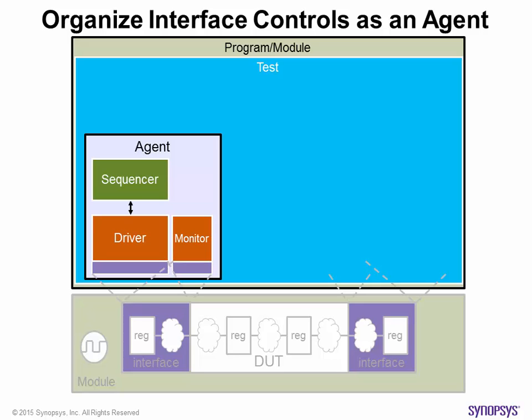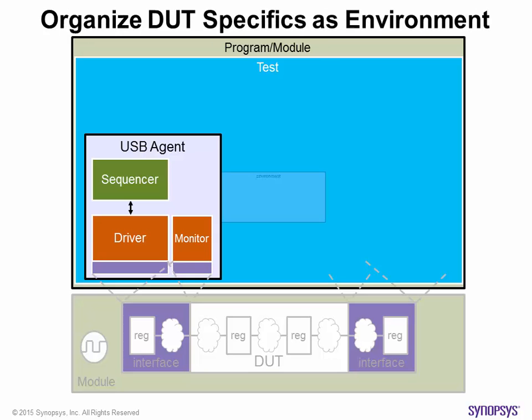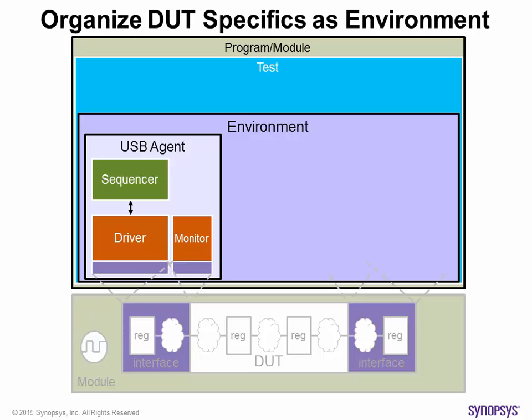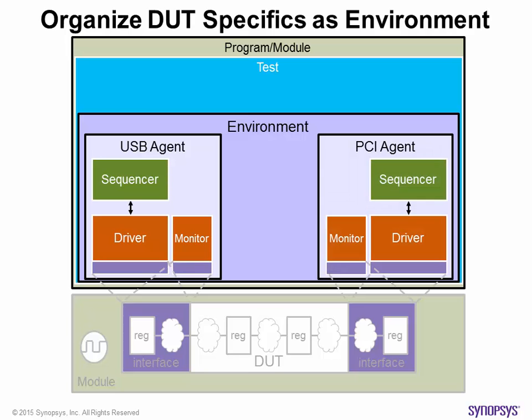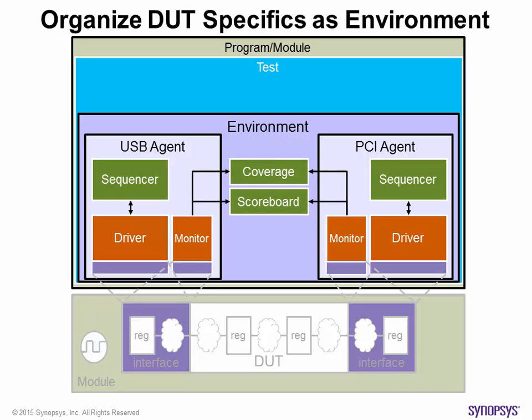An agent represents an external functional block and is independent of the device under test. An example of an agent can be an external USB block, PCI block, AMBA, or any functional block that you want to emulate. The device under test specific component of the test bench is called an environment. Within the environment, one will instantiate an agent for each interface, then add all the other device under test specific components like scoreboard and coverage.